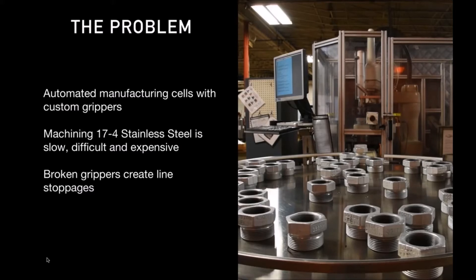Today we're going to look at one particular problem they're facing, which is an automated manufacturing cell that makes a steam pipe coupling. You're looking here at pictures of the steam pipe coupling on a tray. These things are cast, then machined and galvanized.